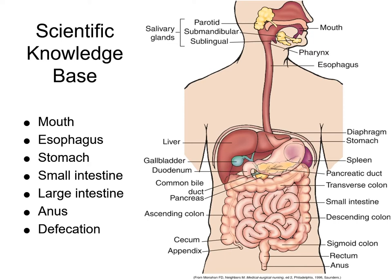The stomach performs three tasks: storage of swallowed food and liquid, mixing of food with digestive juices into a substance known as chyme, and regulating the emptying of contents into the small intestine. The stomach produces and secretes hydrochloric acid, mucus, the enzyme pepsin, and the intrinsic factor. Pepsin and hydrochloric acid help digest protein. Mucus protects the stomach mucosa from acidity and enzyme activity. The intrinsic factor is essential in the absorption of vitamin B12.